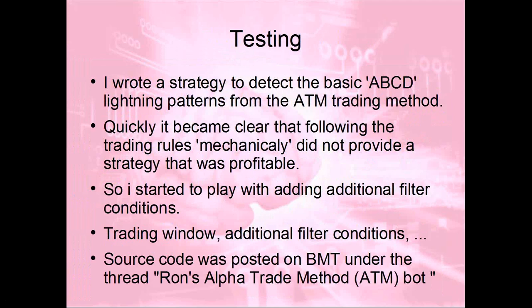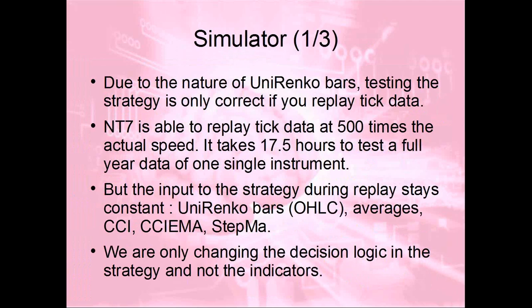Very quickly, people came up with many filter ideas — trading hours, other conditions. Some of this discussion is on the BMT forums; it's called the Trade Runs Alpha Trade Method ATM Bot, developed step by step. But still there was a problem: people kept suggesting new things to test. Due to Heikin-Ashi bars, you couldn't use NinjaTrader's built-in strategy testing — you had to put your chart and run a tick data replay. Replaying one year of data at 500 times the actual speed still took roughly 17 hours.